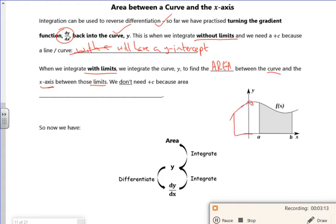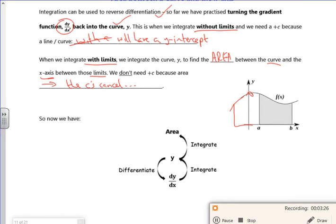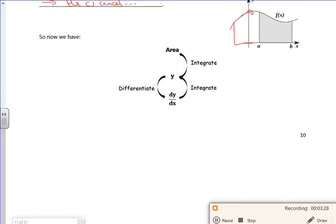In theory, the c's cancel, right? So I've got this lovely little diagram. If I start with y, I can differentiate it to get dy by dx, the gradient function. I can integrate the gradient function to go back to the original curve, and I can integrate the curve to get the area.